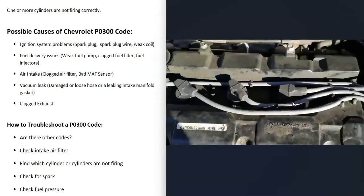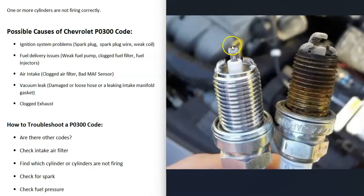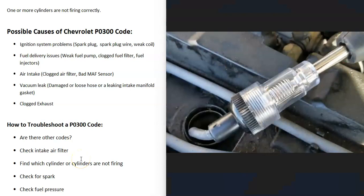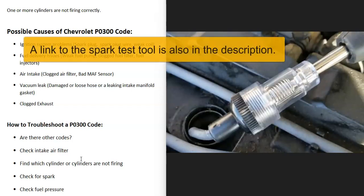Once you identify which cylinder isn't firing, check whether it's getting spark. There are different methods to check for spark — one good method uses a small spark plug tester that attaches to the spark plug wire on one side and the spark plug on the other. With the engine running, you'll be able to see the spark inside it. If you see no spark, you know there's no spark going to that cylinder. I made a separate video on this and will put a link in the description.